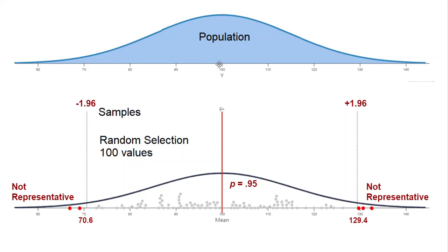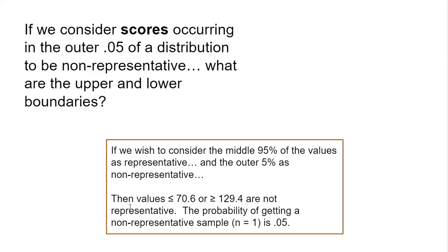We could keep randomly selecting 100 values at a time. Each time, about 0.95 of them would be within our boundaries of plus or minus 1.96, and 0.05 would be outside those boundaries. If we consider the middle 95% of values as representative and the outer 5% as non-representative, then values less than or equal to 70.6 or greater than or equal to 129.4 are not representative. The probability of getting a non-representative sample of size 1 is 0.05.